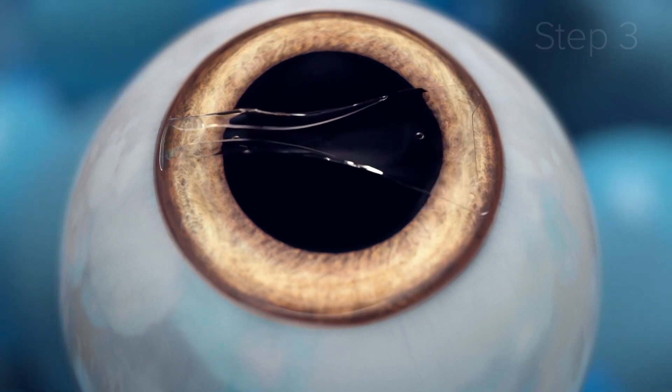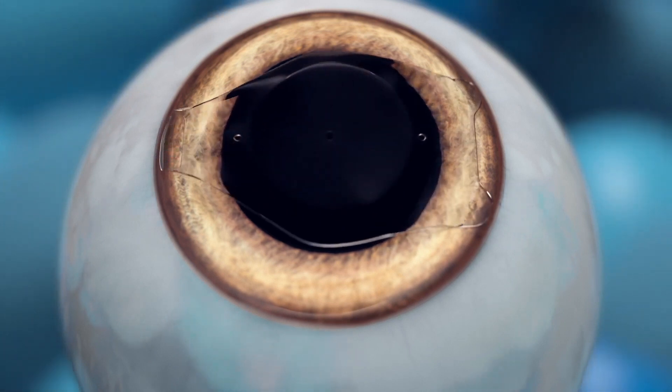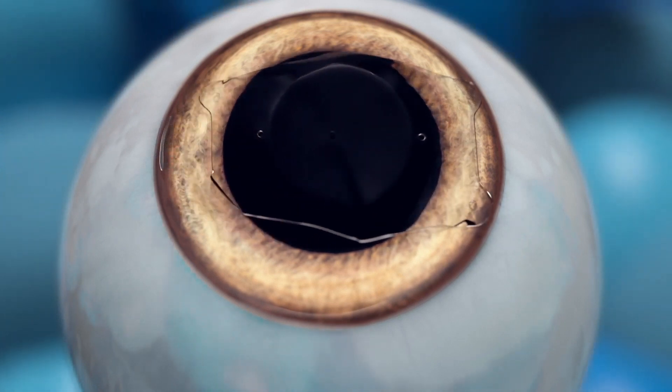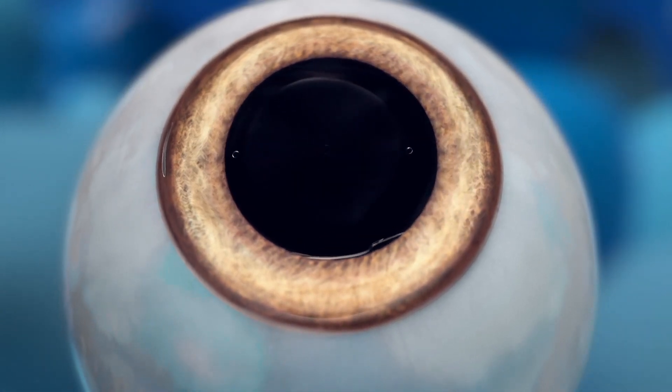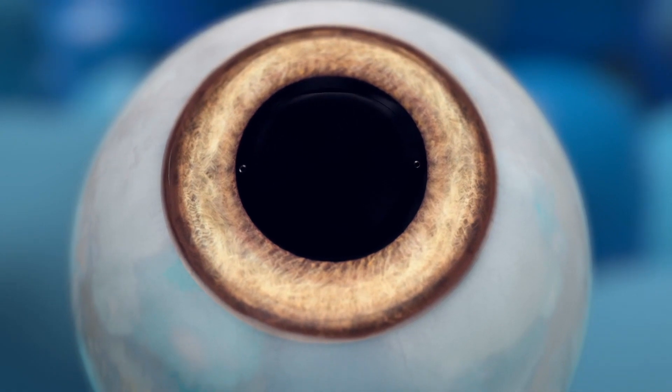Step three, once the EvoICL lens is inserted, the doctor will make any necessary adjustments to ensure its proper positioning in the eye, securely placing it behind the iris, the colored part of the eye, and in front of the natural crystalline lens.